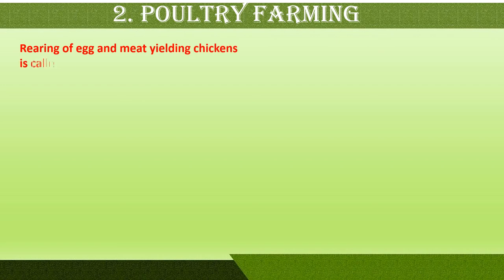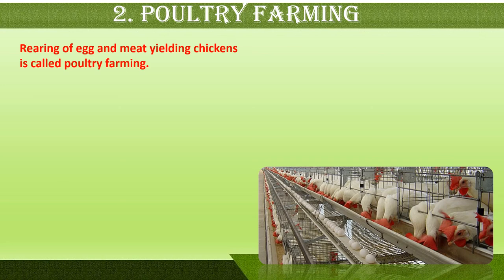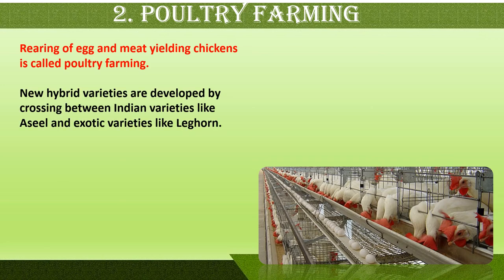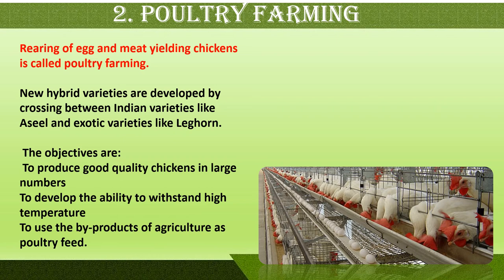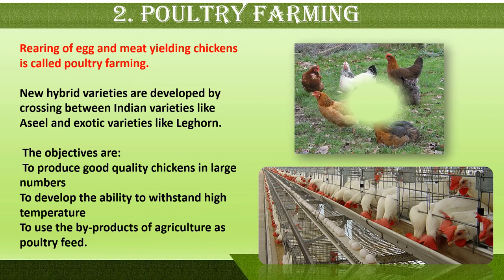The next agro complementary occupation is poultry farming — the rearing of egg and meat-yielding chickens. New hybrid varieties are developed by crossing Indian varieties like Asil with exotic varieties like Leghorn. The objectives of hybridization are to produce good quality chickens in large numbers, to develop the ability of these chickens to withstand high temperature, and to use by-products of agriculture as poultry feed.